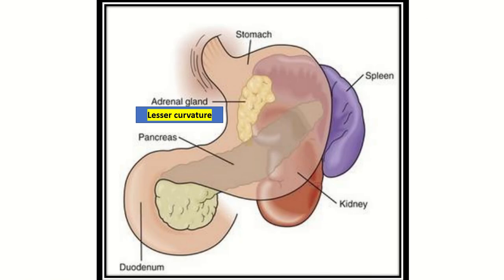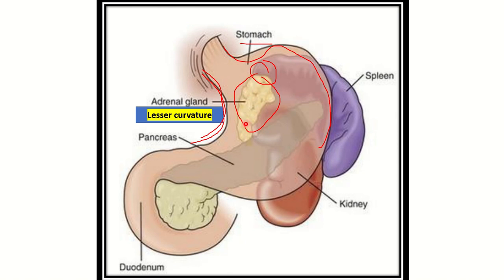We can also see that the body of the stomach and part of the spleen are related to the left adrenal gland. However, the lesser curvature and greater curvature — that is, all parts of the stomach except the body — are not related to the adrenal gland, because the adrenal gland is a smaller structure while the stomach is one of the larger organs and viscera. Only the body of the stomach is related to the left adrenal gland.